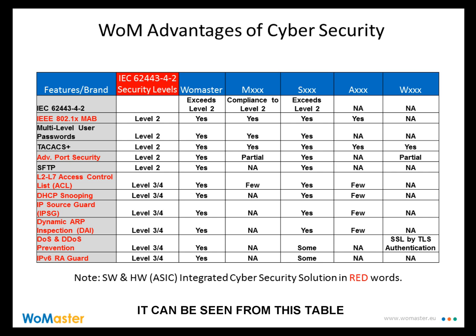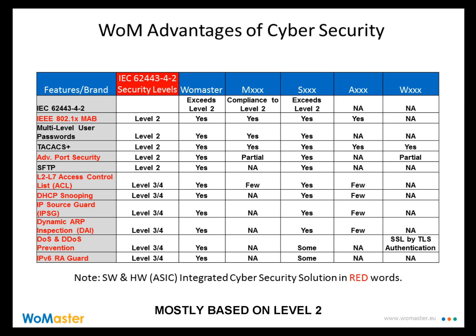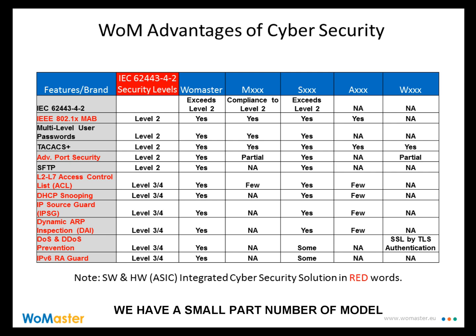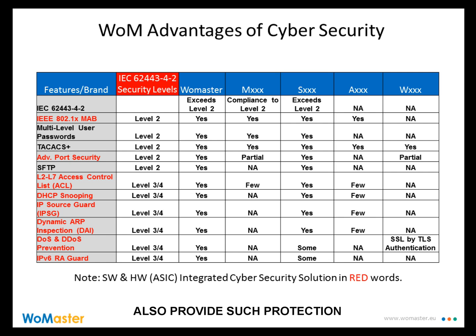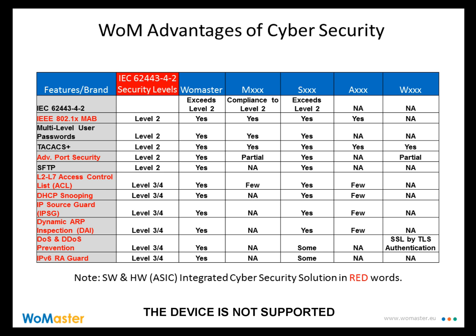As shown in this comparison table, very few companies offer level 3 or level 4 protection — most are based on level 2, and even then only on a few high-end models. Woomaster provides such protection even on models with a small port count, ensuring that the entire industrial environment is protected without leaving vulnerabilities due to unsupported devices. In the cybersecurity area, the Moxa side is quite adequate, but for Westermo, there is almost no protection — even in the DoS area — and it only supports software SSL/TLS certification, meaning actual DoS protection has a ceiling.